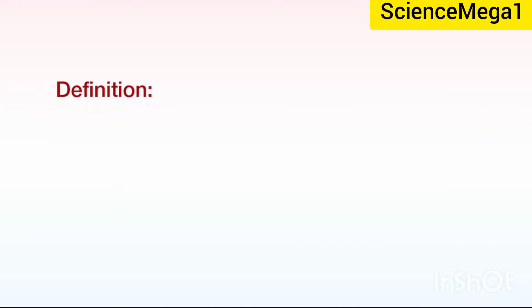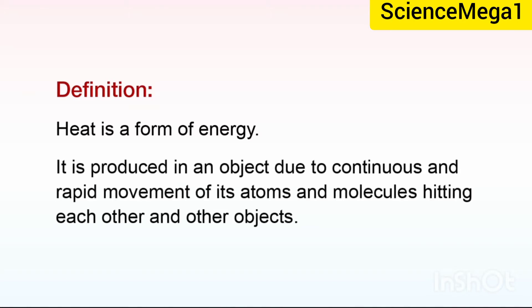By way of definition, heat is a form of energy. It is produced in an object due to continuous and rapid movement of its atoms and molecules hitting each other and other objects.